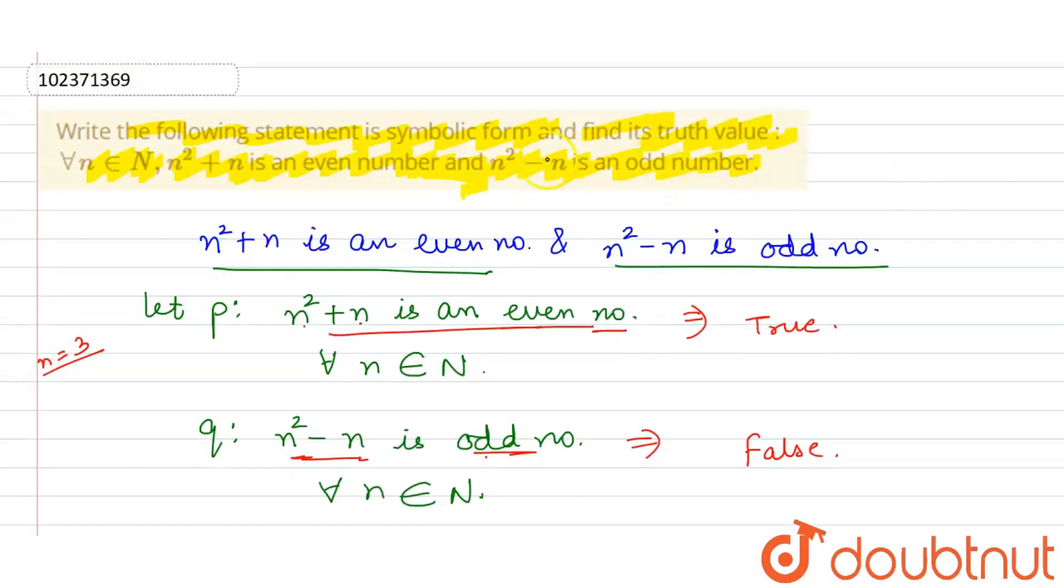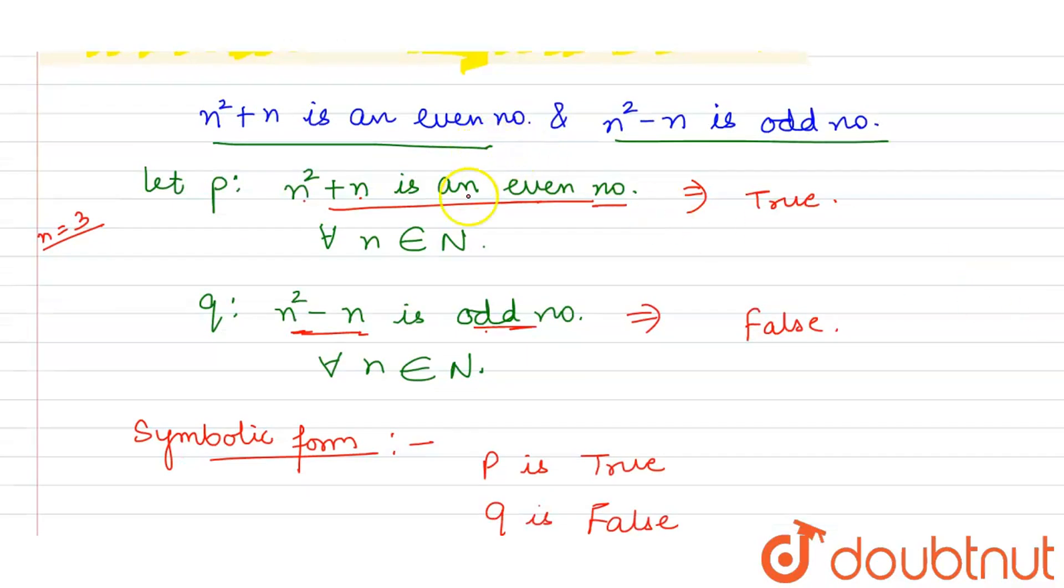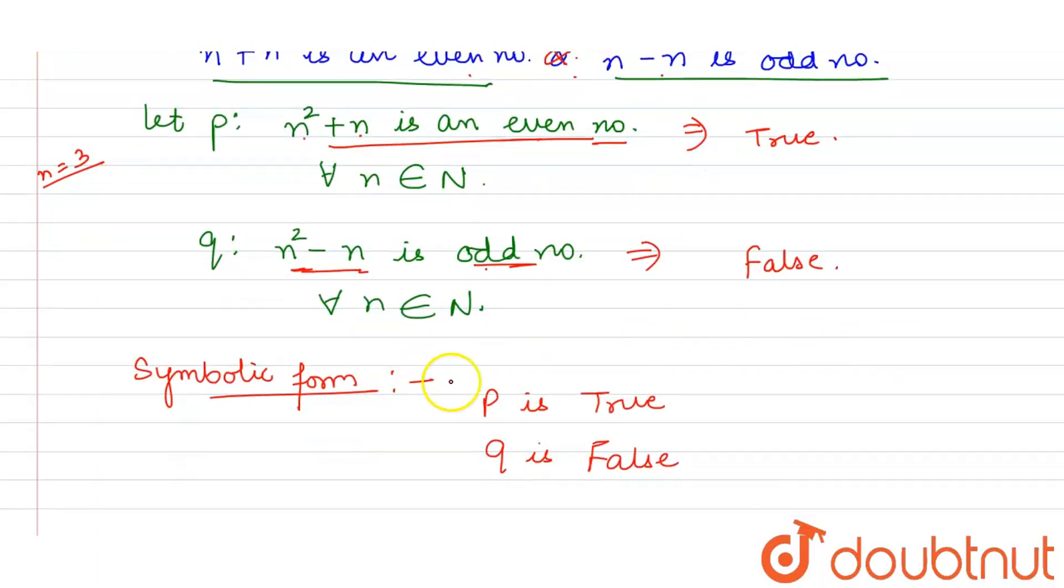Ab symbolic form kya ho jayegi? Symbolic form batani hai, and truth value. Symbolic form likhen, to hamein ismein kya diya, and. n² + n is an even number, and. Yani isne bola hai ki dono jo hain, sahi statement hai. But ek true hai, ek false hai, to symbolic form kya ho jaye? P and Q. And ka sign lagaya. This is the symbolic form.